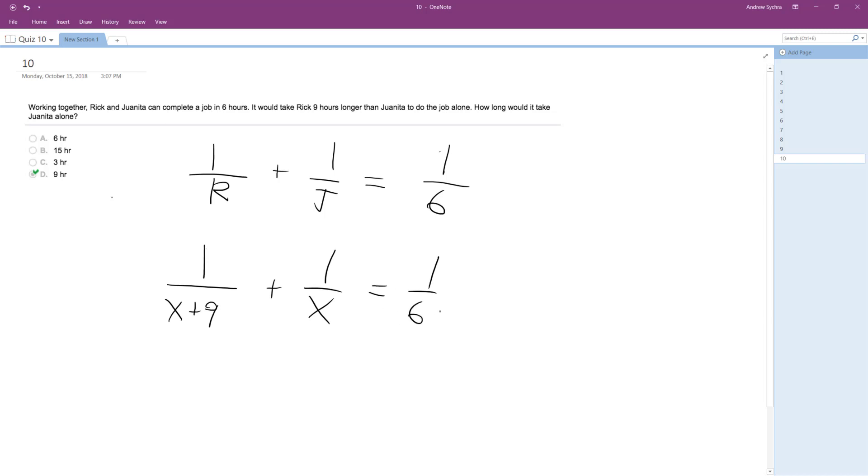So we just get a common denominator. In this case, our common denominator is going to be 6X(X+9). So what we end up with is 6X plus 6(X+9) equals X(X+9).